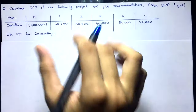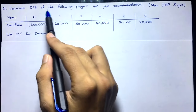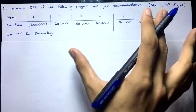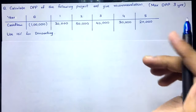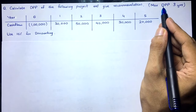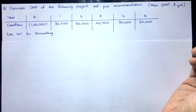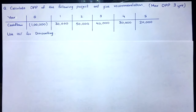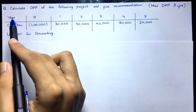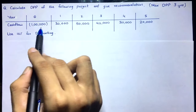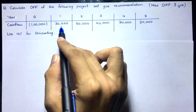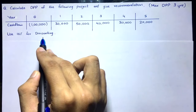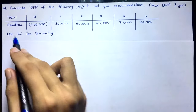Now let's look at a problem. Calculate the discounted payback period of the following project and give a recommendation. The maximum DPP allowed is three years — if the DPP is above three years, reject; if below or equal to three years, accept. The project has an initial investment of minus one lakh, with cash inflows of 30,000; 50,000; 40,000; 30,000; and 20,000 at the end of years one through five. Use 10% as the discounting rate.